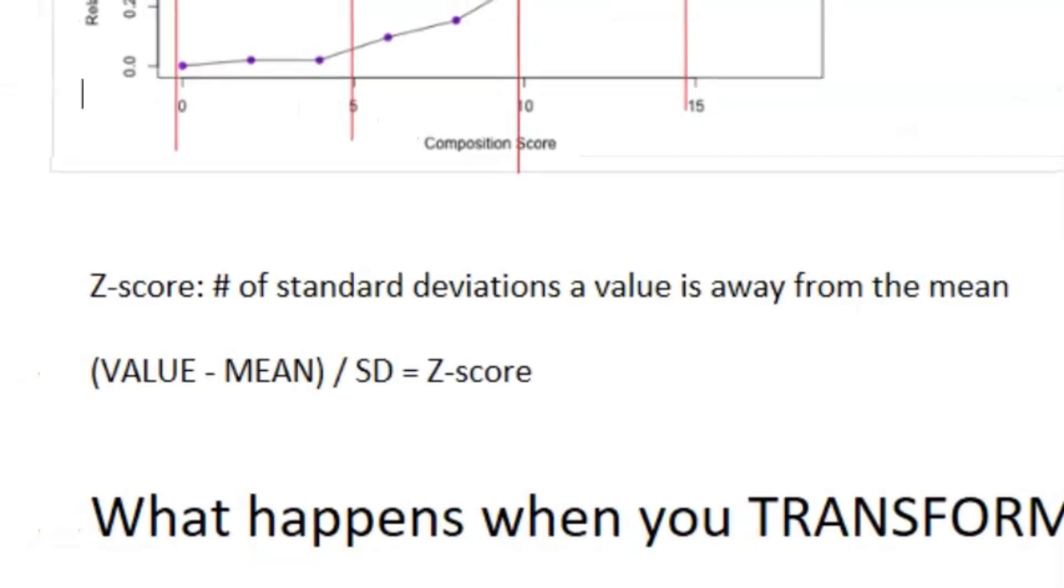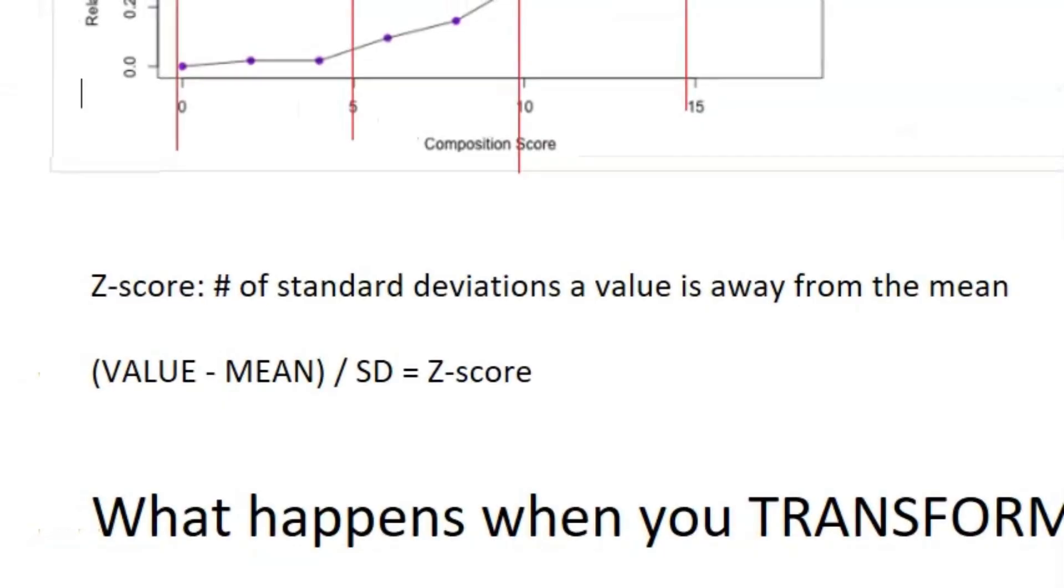Okay, so now let's talk about Z-scores. So Z-scores are tying back to the idea of standard deviations. Z-scores are simply the number of standard deviations a value is away from the mean, and this is the official equation for it. It's whatever value you're looking for the Z-score for minus the mean over the standard deviation.